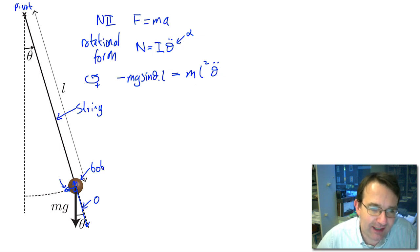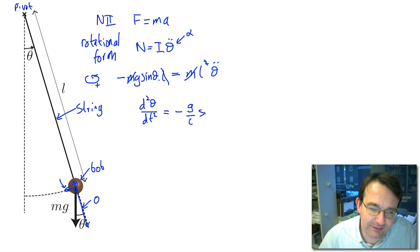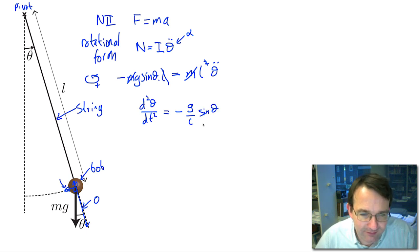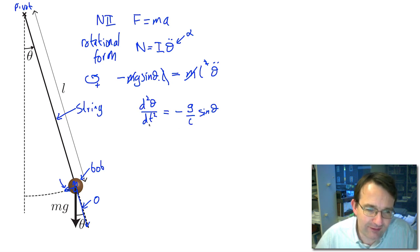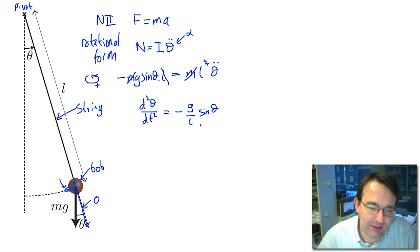Rearranging and writing it out in full, we get d²θ/dt² = −(g/L)·sinθ. This is our differential equation, and it's clearly a problem. We want the second-order differential of theta with respect to time to be equal to the sine of theta. This is a very difficult equation to solve — even mathematicians have trouble with it.